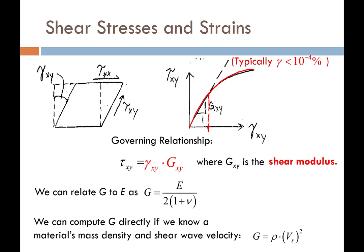We can also compute the shear modulus directly if we know the material's mass density and shear wave velocity — G equals rho times V_s squared. This has become probably the most common and popular way that engineers and material scientists today actually measure the shear modulus of materials. They put a shear wave into a material and measure its shear wave velocity V_s, then multiply by the mass density rho.